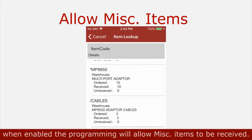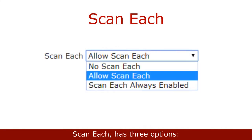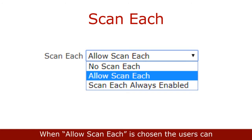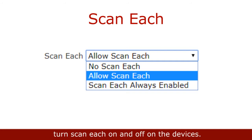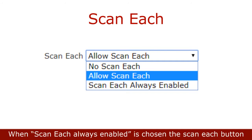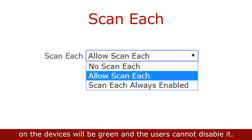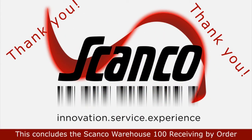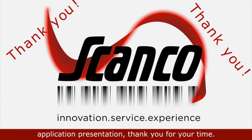Allow miscellaneous items — when enabled, the application will allow miscellaneous items to be received. Scan each has three options: when no scan each is chosen, the scan each button will not be present on the device; when allow scan each is chosen, the user can turn scan each on and off on the device; when scan each always enabled is chosen, the scan each button will be green and the user cannot disable it. This concludes the Scanco Warehouse receiving by order application presentation. Thank you for your time.